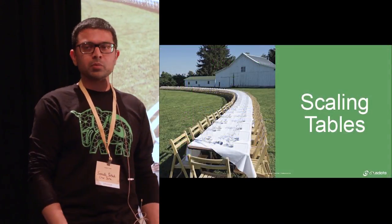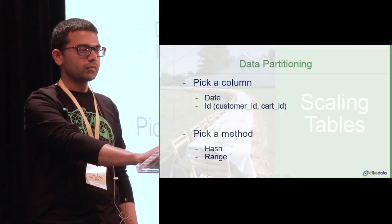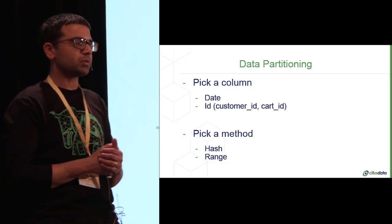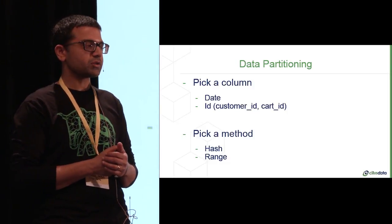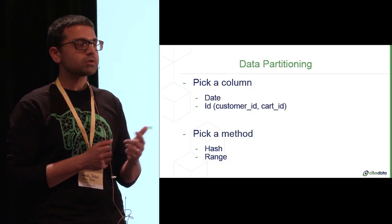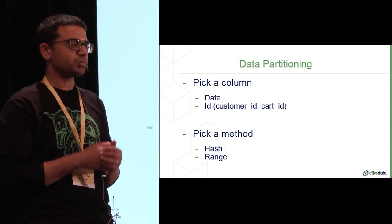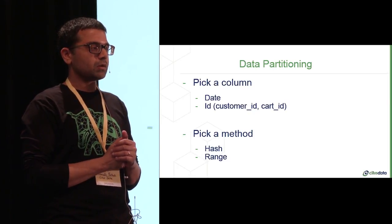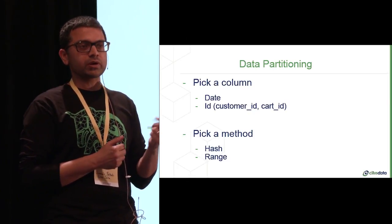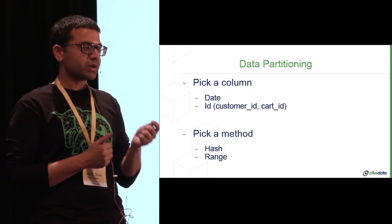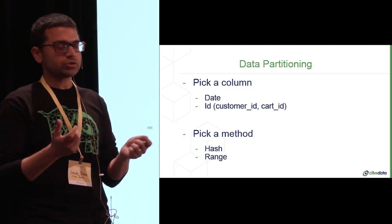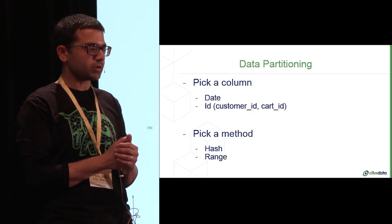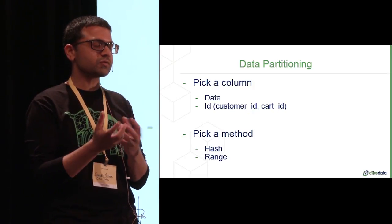So let's talk a little bit about scaling the tables. This probably, again, is something you guys are mostly familiar with, but some of the basics of partitioning, right? You pick a column and you pick a method, typically. And then this is simplistic, but you can pick a column or combination of columns or composite keys as well. These are just a few examples, date or ID. And then you pick a method, which could be hash or range. And again, there are more things you can do here in terms of combinations of these methods as well.